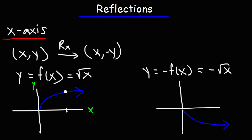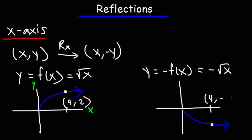When x is 4, we have the point (4, 2). When we reflect it, x will still be 4 — the x-values do not change — but the y-value did change. It changed from positive 2 to negative 2, so it changed from y to negative y. That's what you need to know whenever you're reflecting a point or a graph over the x-axis: the x-values stay the same, but the y-values will change.